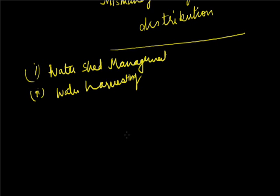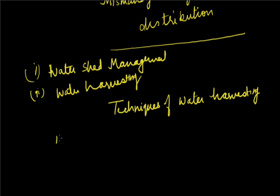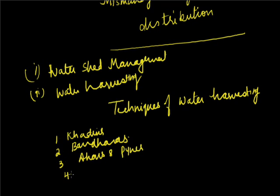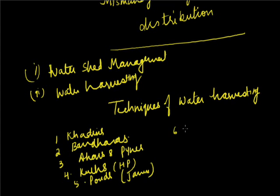The various water harvesting techniques are: first is ghadins or tanks, second is bandharas, third is ahars and pines which is common in Bihar, fourth is kuls in Himachal Pradesh, fifth is ponds in the Jammu belt, sixth is aries or tanks in Tamil Nadu, seventh is surangams in Kerala, and last is kattas which is a common technique in Karnataka.